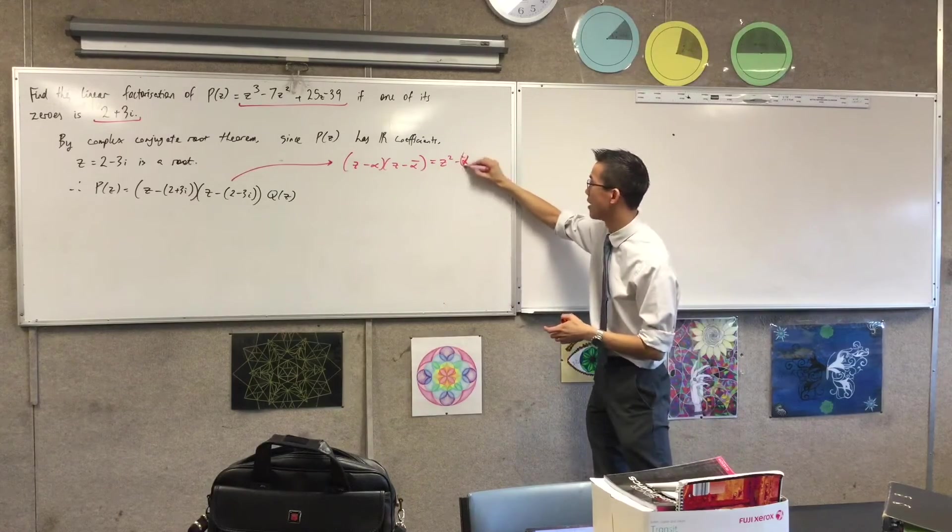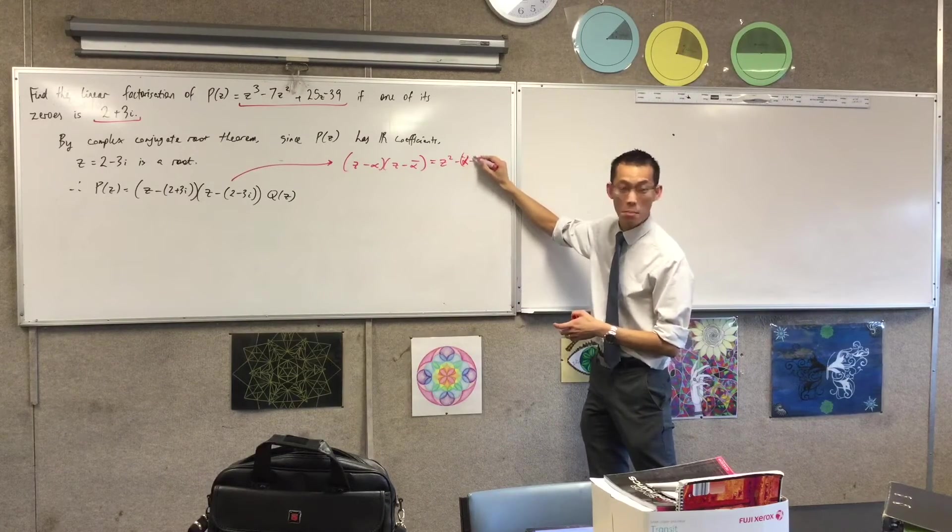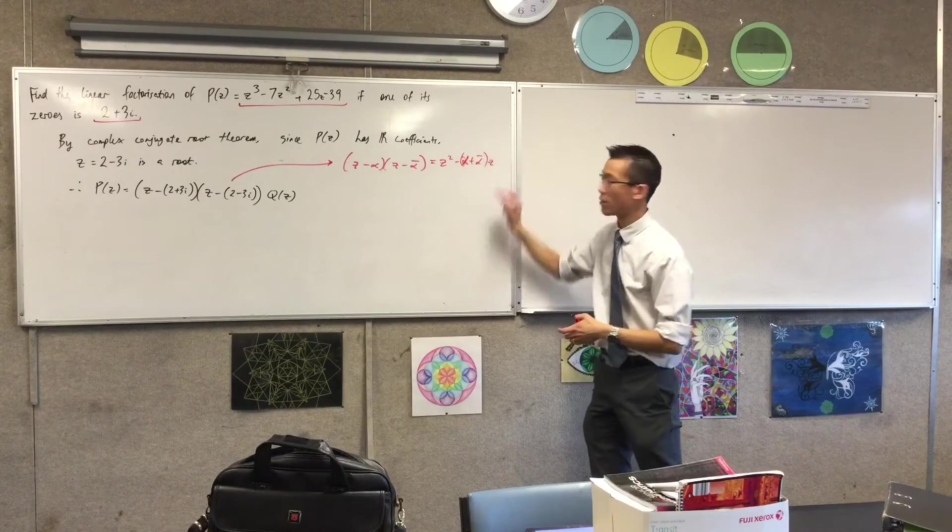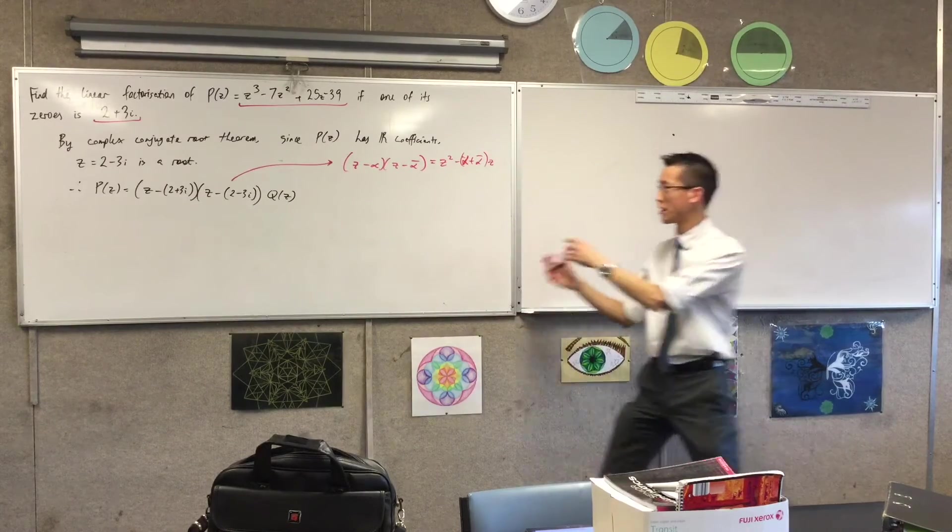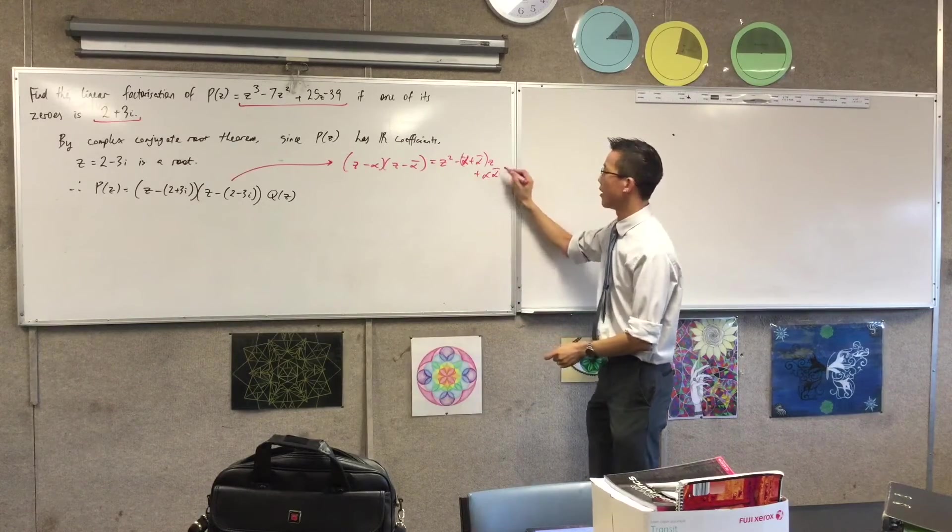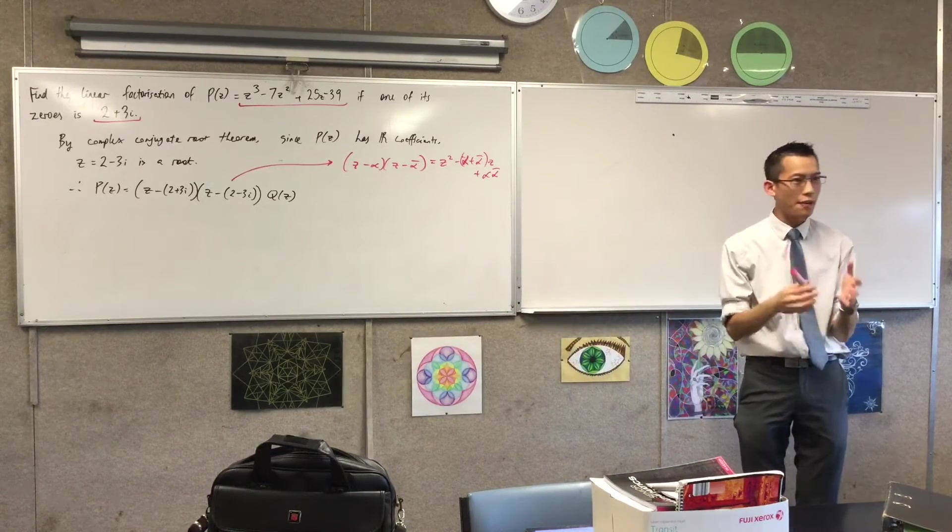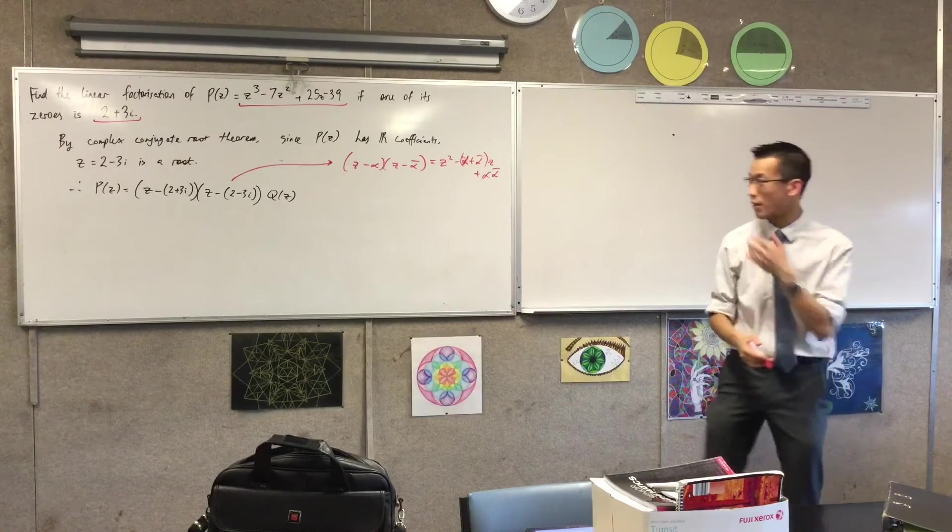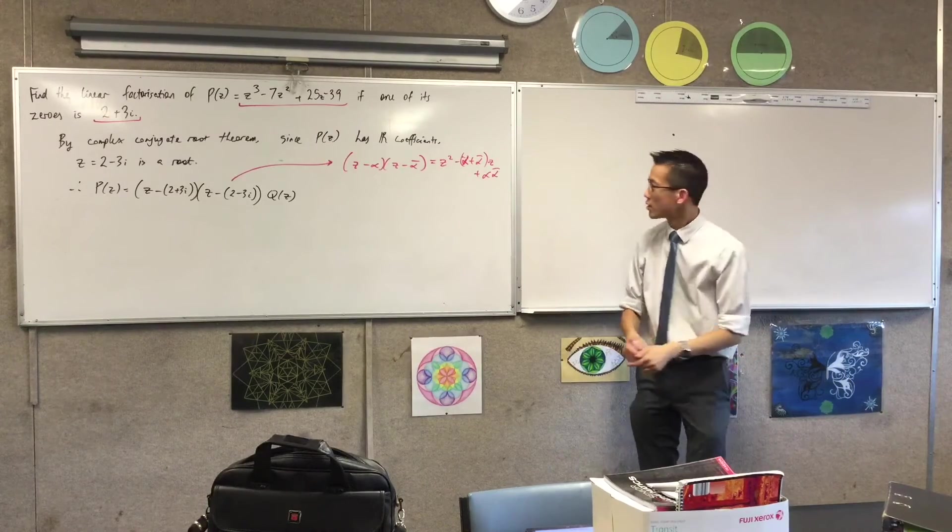And then what's trailing on the end? It just comes from the constant term, which is plus alpha times alpha bar. Is that okay? But remember what alpha and alpha bar are and how they relate to each other—they are complex conjugates. So therefore, another color.